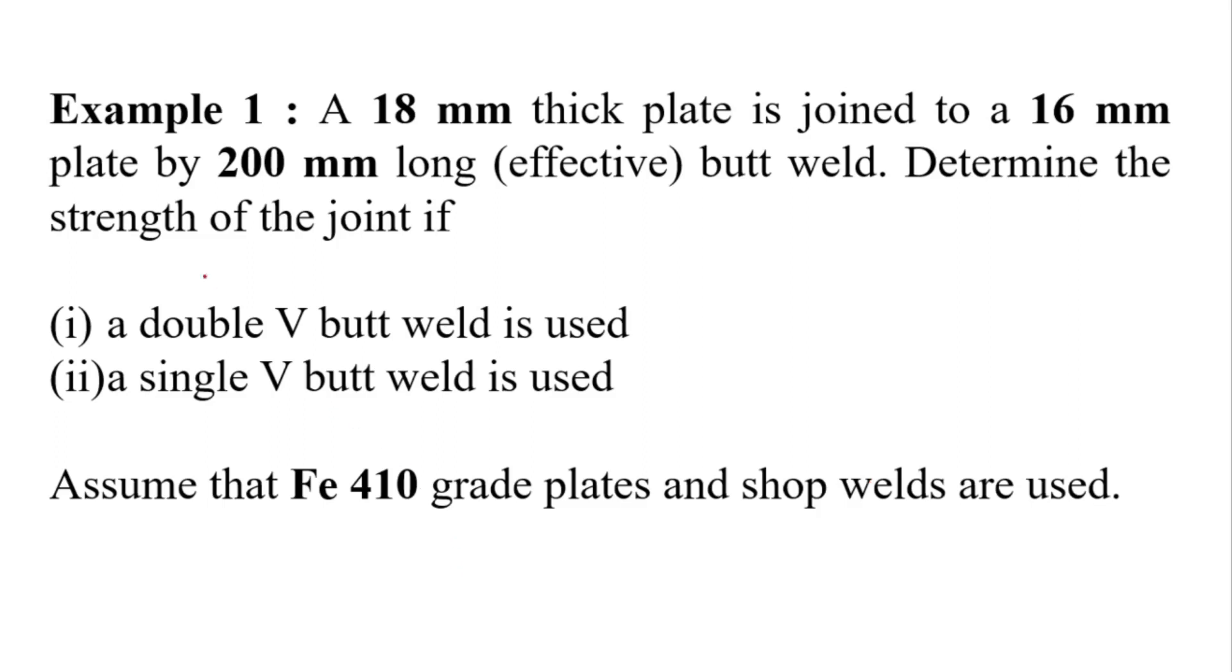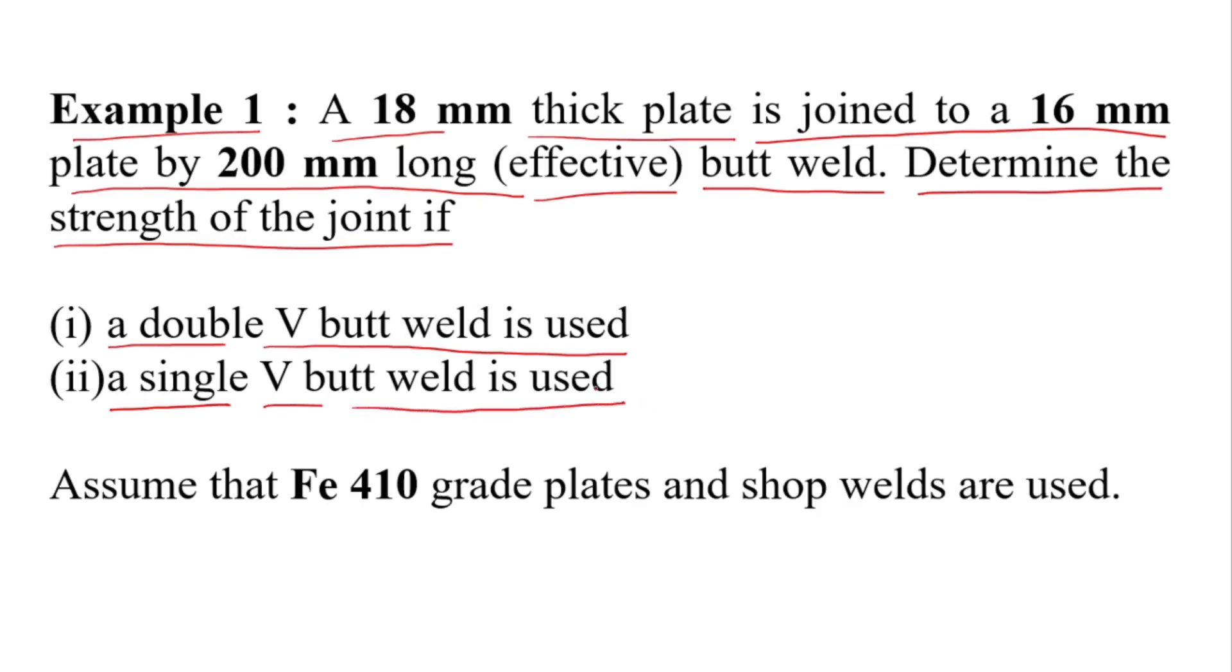Example 1. An 18mm thick plate is joined to a 16mm plate by 200mm long butt weld. Determine the strength of the joint if for case 1 a double V butt weld is used and case number 2 a single V butt weld is used.